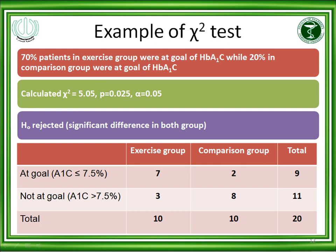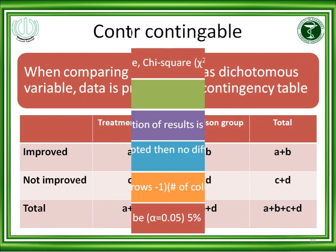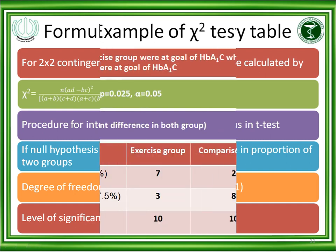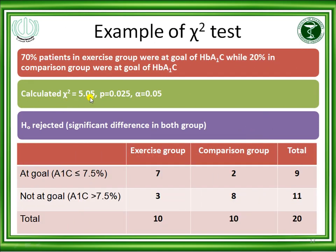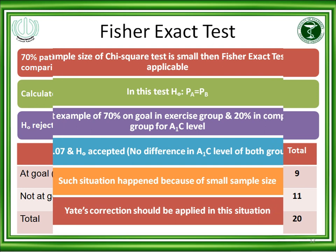Applying the chi-square formula with values A, B, C, D from the contingency table, the chi-square value comes out to 5.05 and the P-value is 0.025. Since 0.025 is less than the alpha level of 0.05, the null hypothesis is rejected. There is a significant difference between both groups — HbA1c is significantly reduced in the exercise group, meaning exercise significantly reduces HbA1c level. This is the interpretation of our results.